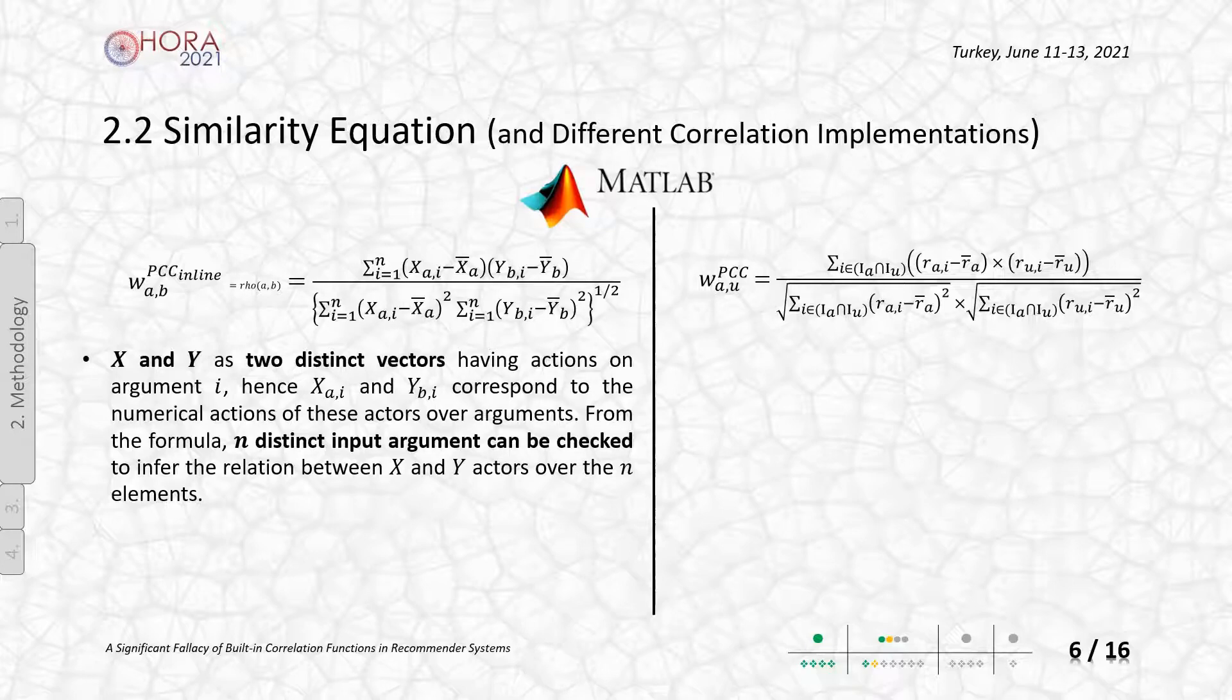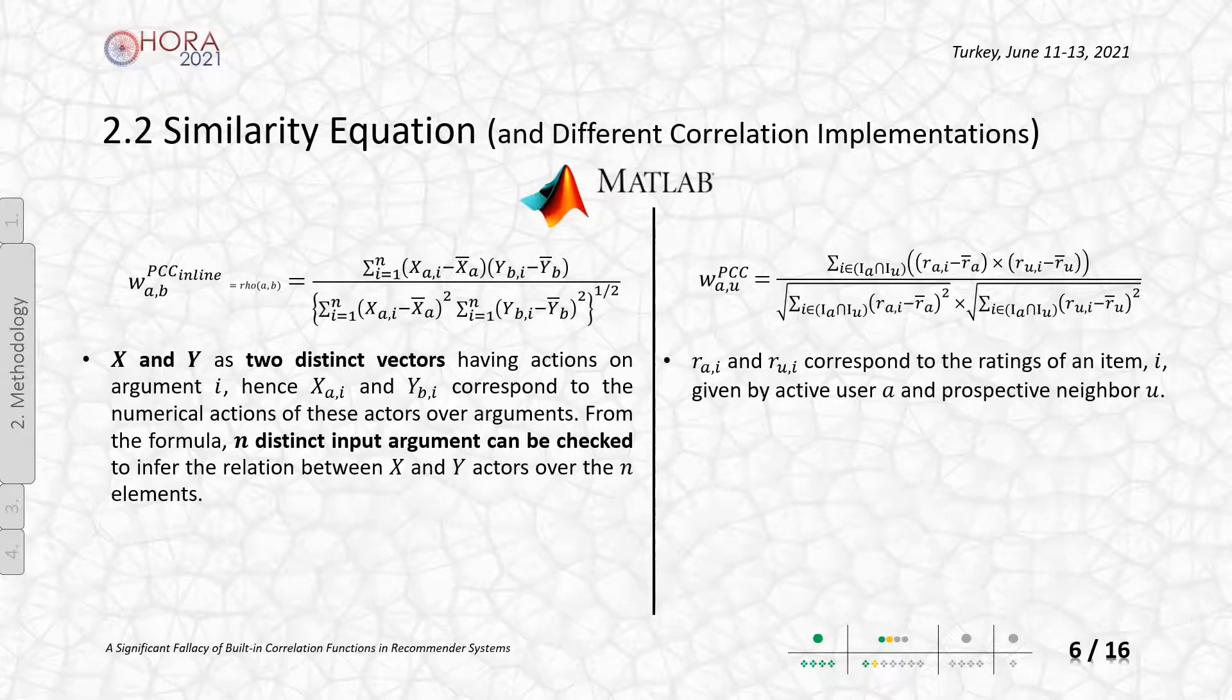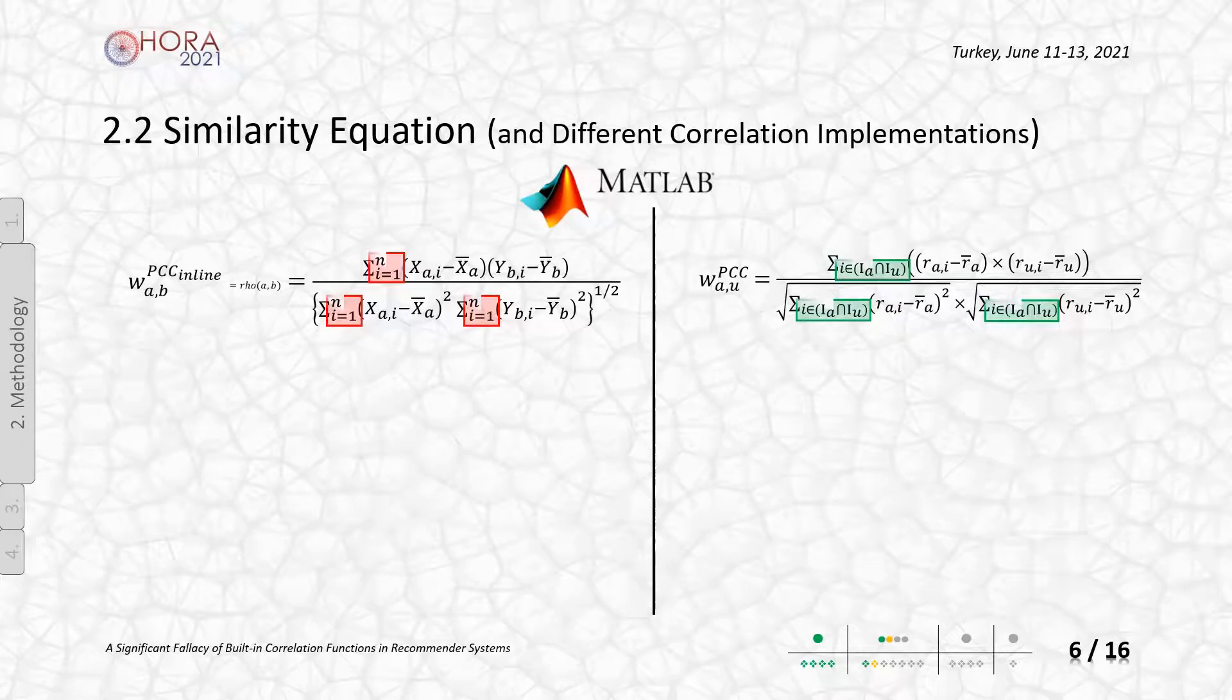This is the most critical part in our study. For the RS implementation, the parameters are according to the user rated behaviors and all ratings are considered. You can see that there are clear differences between those formulations. It is obvious that the way of processing the vectors may differentiate.